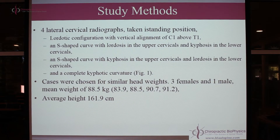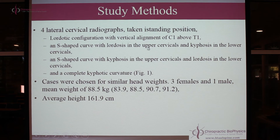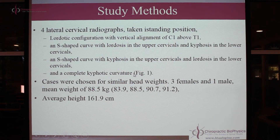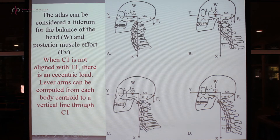We took four lateral cervical x-rays — we didn't need 500, only four. We needed a healthy lordotic neck with a uniform smooth curve with C1 aligned with T1, an S-shaped curve with lordosis in the upper and reverse curve in the lower cervical spine, an S-shaped curve opposite to that — kyphotic at the top and lordotic at the bottom — and then a complete kyphotic configuration, a complete reversal. Cases were chosen for similar head weights: three females and one male averaging 88.5 kg and 161.9 cm in height.